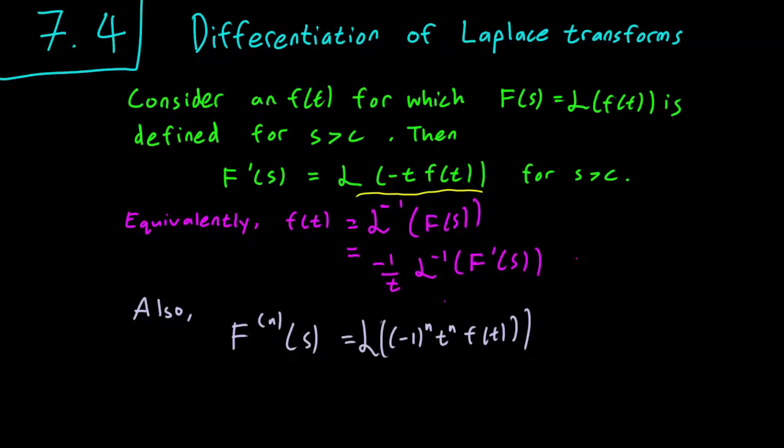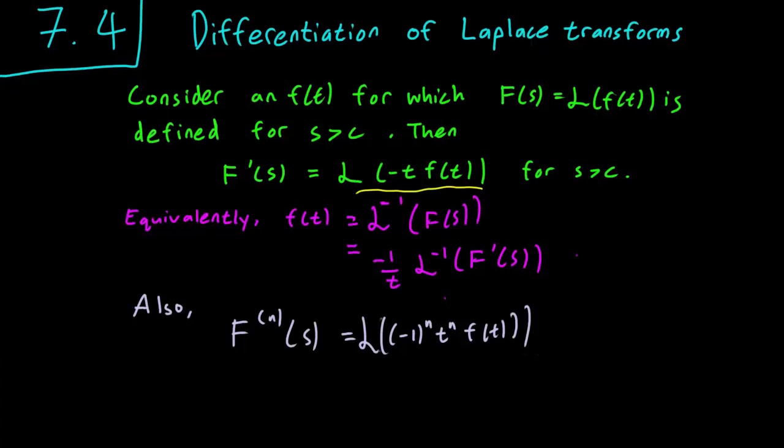Equivalently, we see that another way to write this down is that f is equal to the inverse Laplace transform of the derivative over t. So that's another way to write it if you want to figure out the inverse Laplace transform instead.